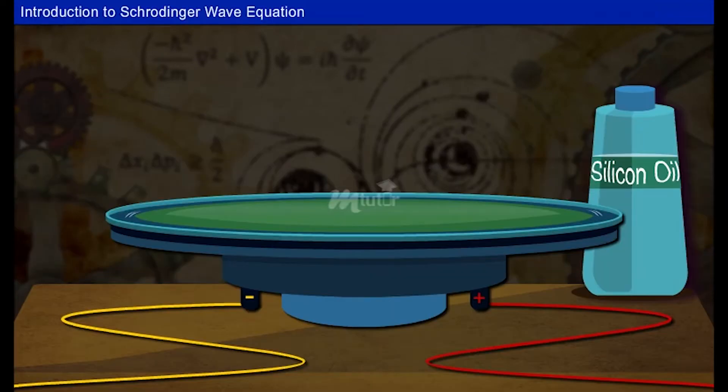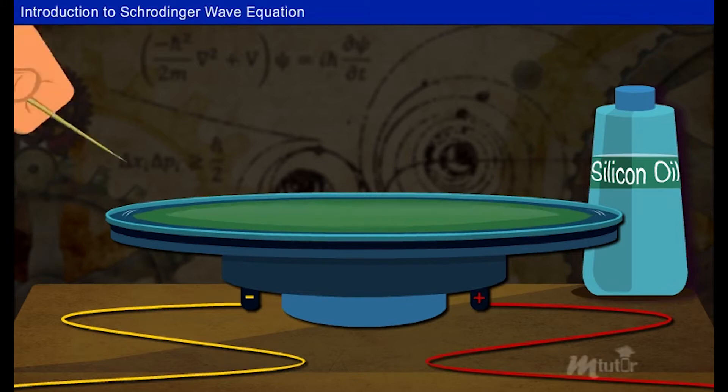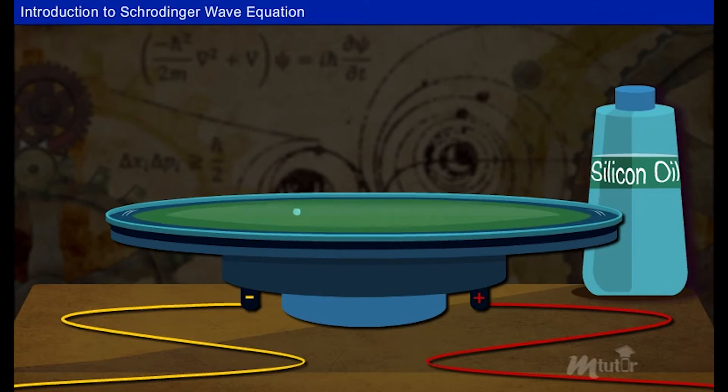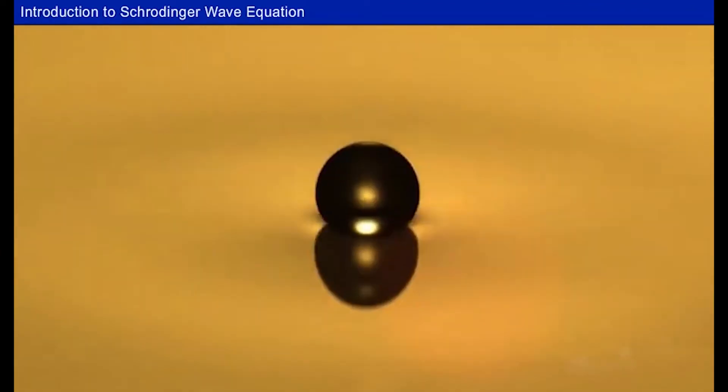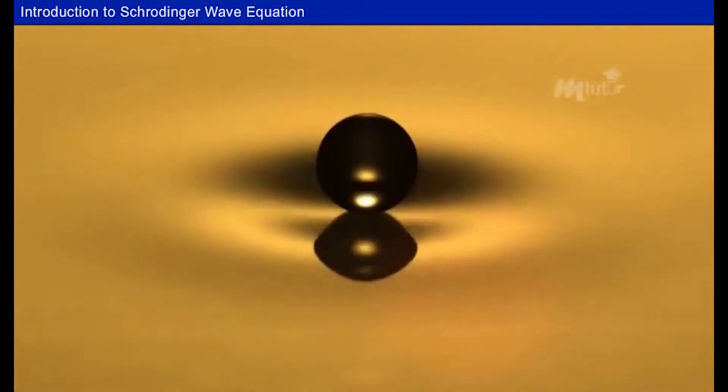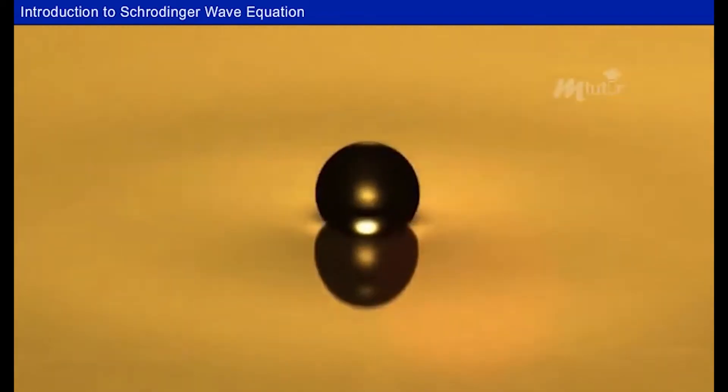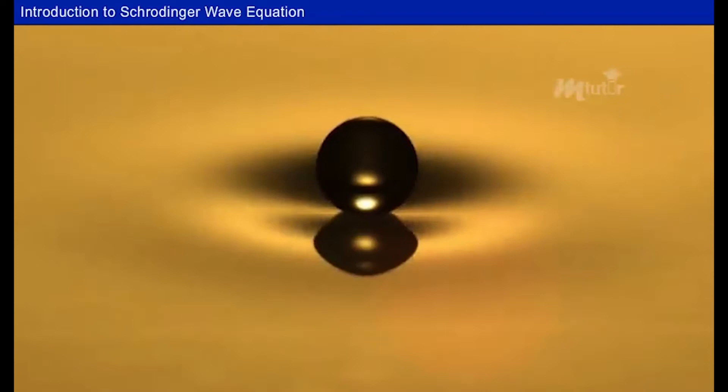Before moving on to the topic, let us do an experiment. Here we use a speaker to vibrate a dish containing silicon oil. Now, if we take a toothpick and make little droplets over the surface of the speaker, the droplets start to bounce. Every time the droplets land on the surface, it creates a wave.